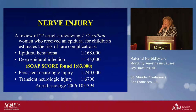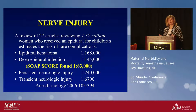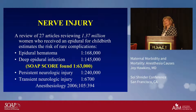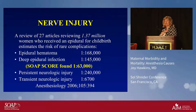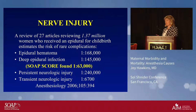Of the top causes of liability in more modern claims, all but one are regional anesthetic complications — nerve damage, headache, back pain, emotional distress. What's causing nerve injury? Basically two things: hematoma or infection. In a review of 1.37 million women who received an epidural for childbirth, estimated rare complications showed persistent neurologic injury occurring at roughly 1 in 1.25 million — which is reassuring to quote to patients during the consent process.